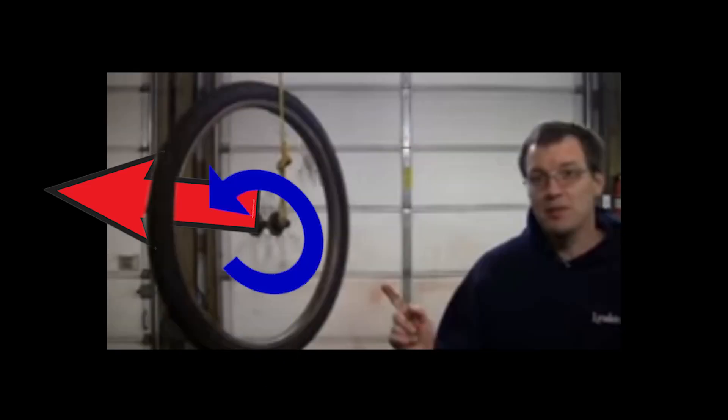And when he puts it on the string, gravity is pulling down on it, trying to rotate it like this, and making a torque that, due to the right-hand rule, has a vector in this direction.